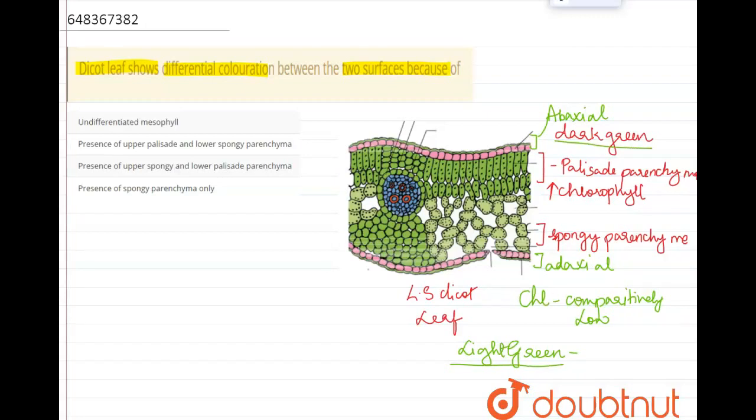So, because of the presence of two different types of parenchyma tissue on either sides, there is a differential coloration between the two surfaces of the dicot root.